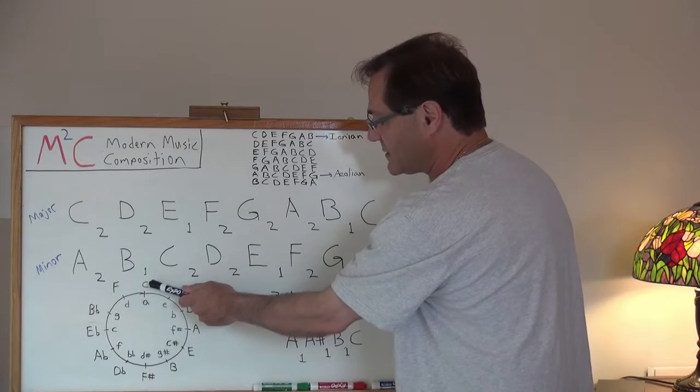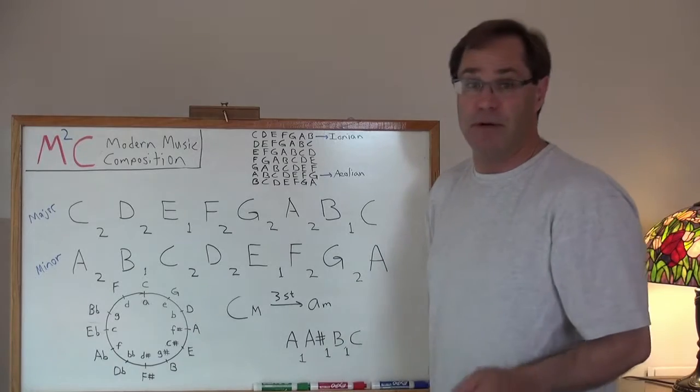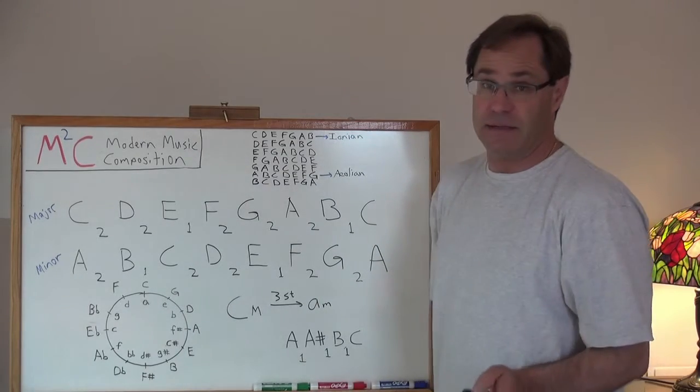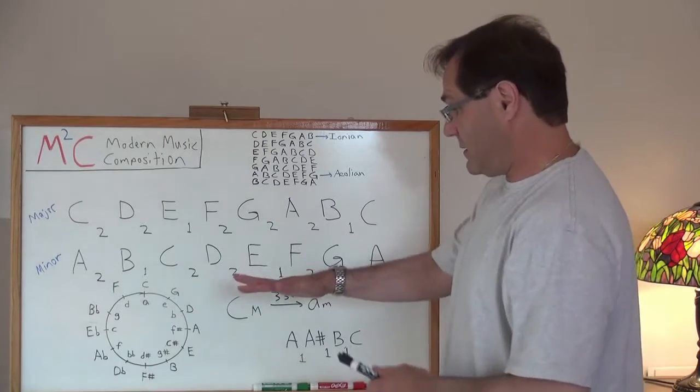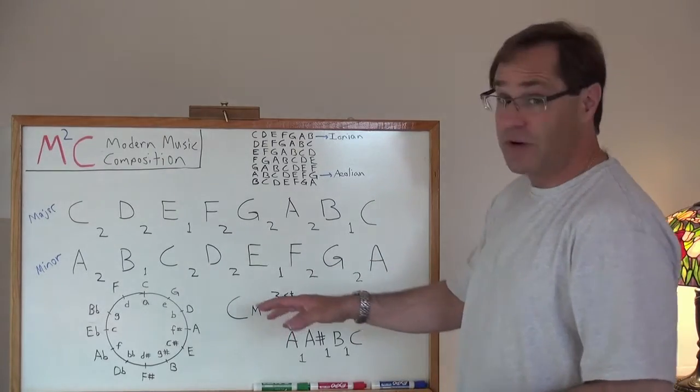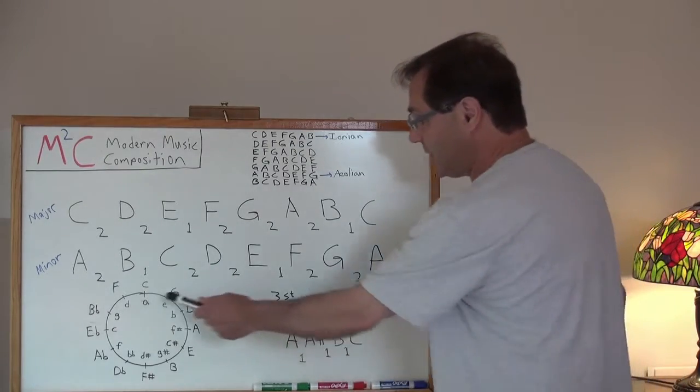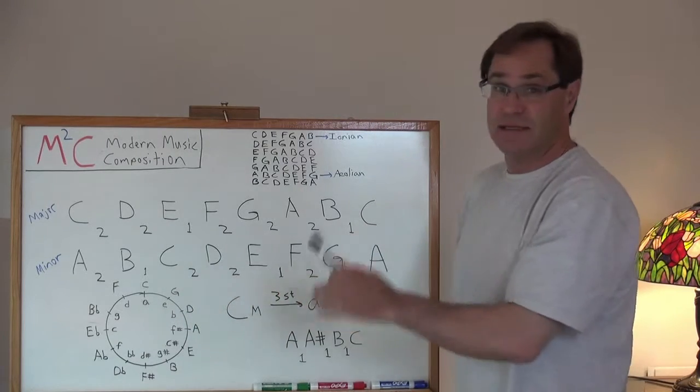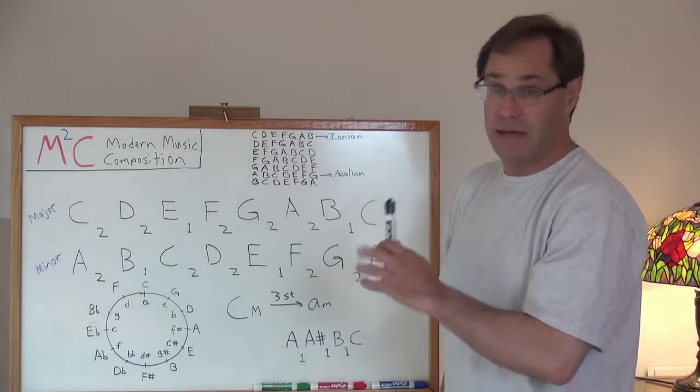For example, with respect to C major, A minor is its relative. With respect to G major, E minor is its relative. Well, you could probably see a little trend here, and that trend is that every single relative minor is three semitones stepped down from its major.